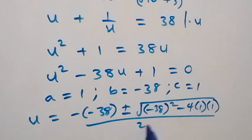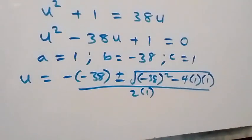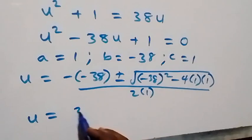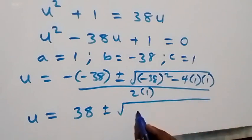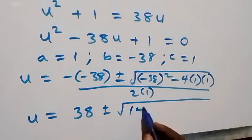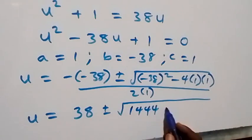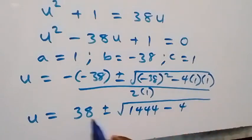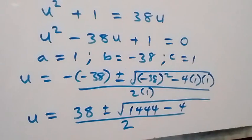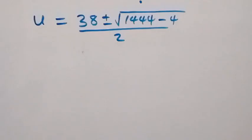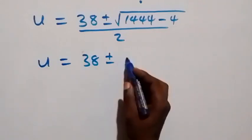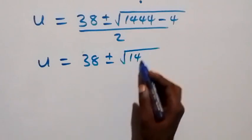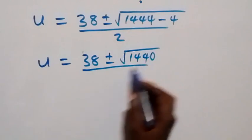When we simplify further, this gives us u equals 38 plus or minus square root of 38 squared — which gives us 1444 — then minus 4, over 2. From here this becomes u equals 38 plus or minus square root of 1440, over 2.